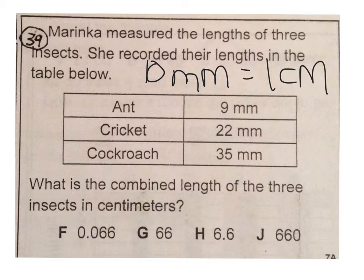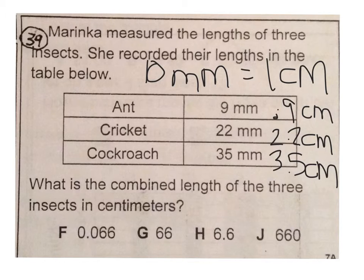So, they gave us nine millimeters. So, that would basically be like nine-tenths of a centimeter, 0.9 centimeters. 22 millimeters would be 2.2 centimeters. Cockroach, yuck, would be 3.5 centimeters. What is the combined length? I'm going to need to add these.